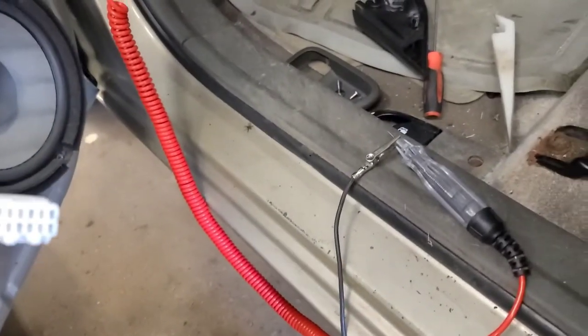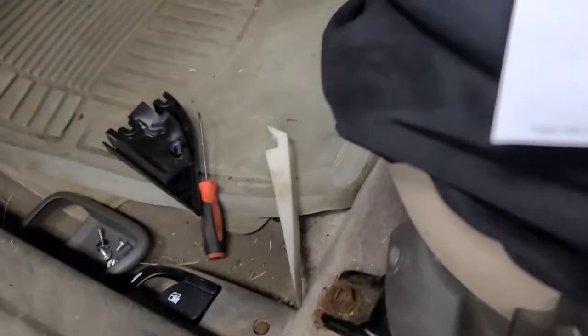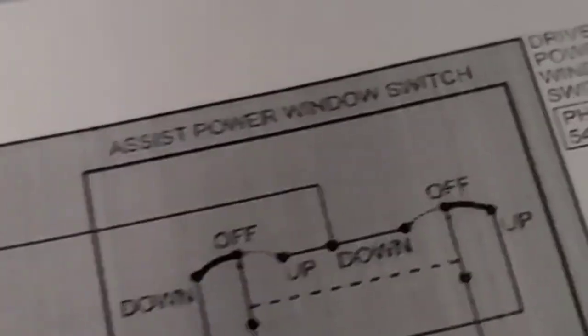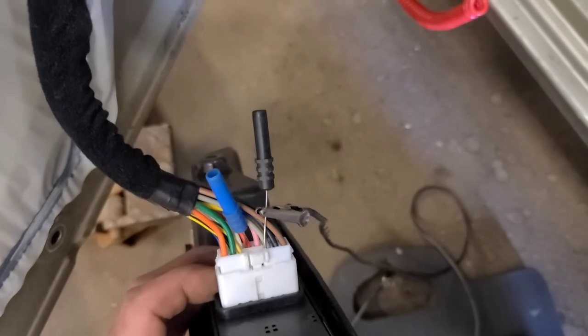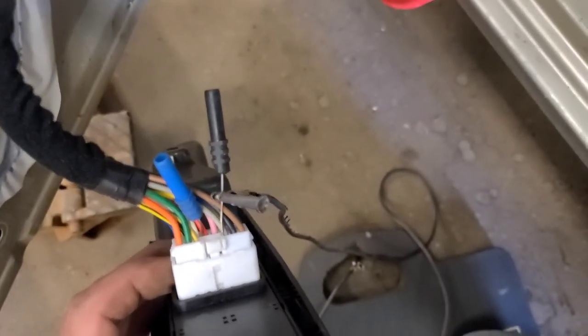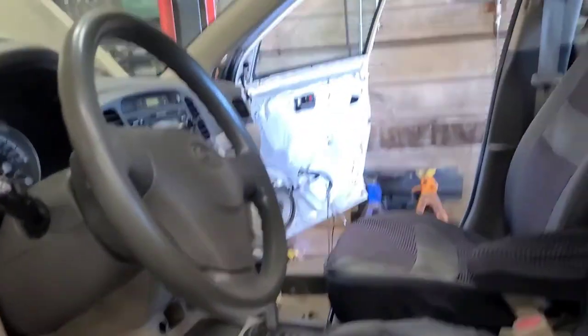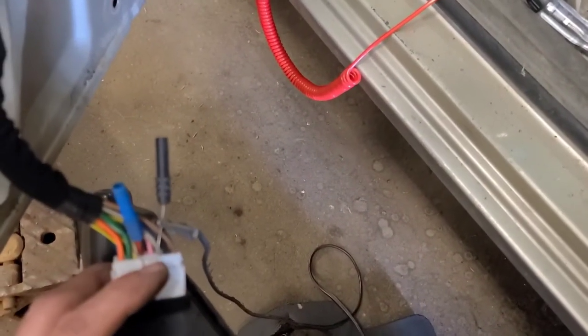There's a test light connected, back probing the brown wire coming out of location one on the switch. When I roll the window up, it lights up. And you can hear the motor trying to work on the other side. So we've got to check the other wire now. I'm on the gray wire now and no power coming out of the switch. If I supply power from the red wire here to the gray wire while I try to roll the window down, it rolls down as you can see.